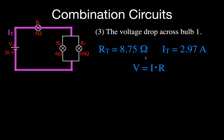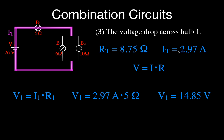Now we want the voltage drop across B1. The equation is V₁ equals I₁ times R₁. The resistance is given as 5 ohms, and the current through bulb one equals the total current, 2.97 amps, because it's in the main series path. Multiplying gives 14.85 volts — that means bulb one uses 14.85 of the 26 volts supplied by the battery.